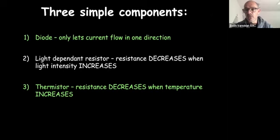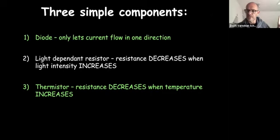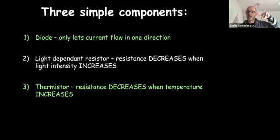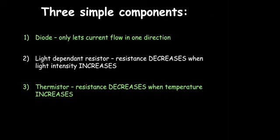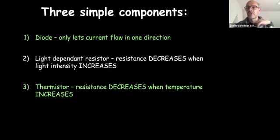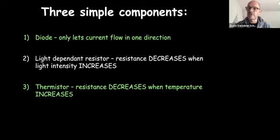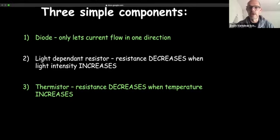Third, a thermistor — 'therm' as in thermal, to do with temperature. It's a resistor that changes with temperature, and you've definitely got one at home because there's one in your fridge and freezer. I was in my kitchen earlier and my freezer went click, then made a whirring noise. What happened was the temperature inside was rising, the thermistor changed resistance — as temperature went up, resistance went down, it turned on the circuit, made it colder, then the resistance went back up and switched it off again.